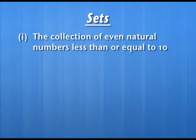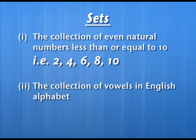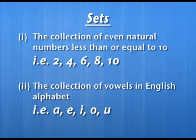Let us consider some numbers. The collection of even natural numbers less than or equal to 10 — only these five numbers will be taken, no number other than these five. Again, suppose we collect the vowels of the English alphabet: only A, E, I, O, U will come; no other letter of the English alphabet will be here. These two collections are also well defined, so the collection of these numbers and these alphabets is again an example of sets.